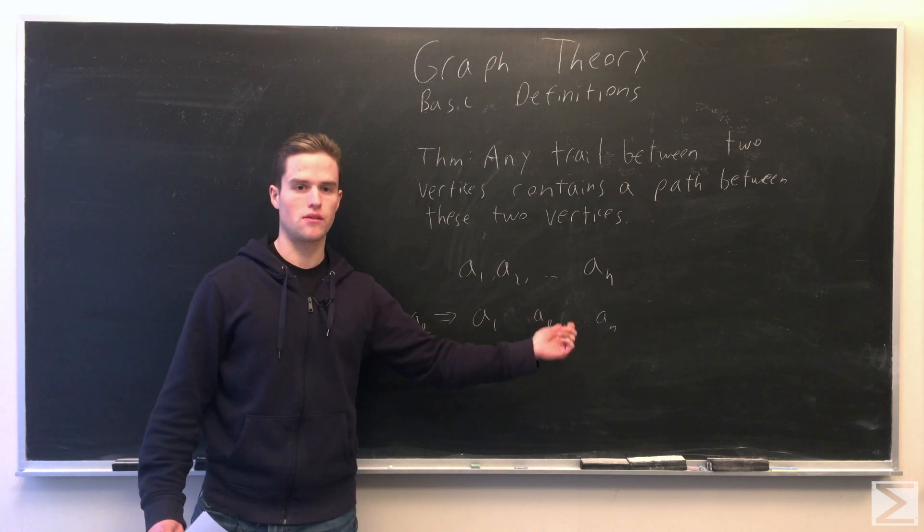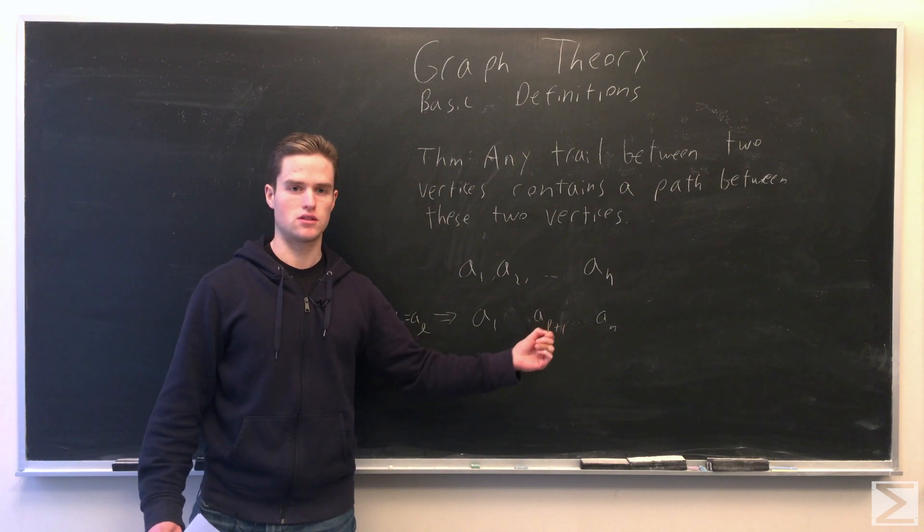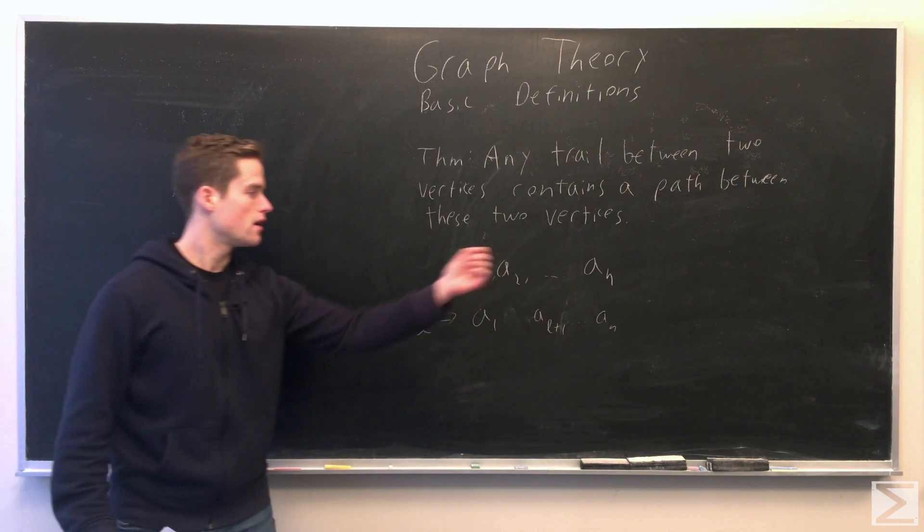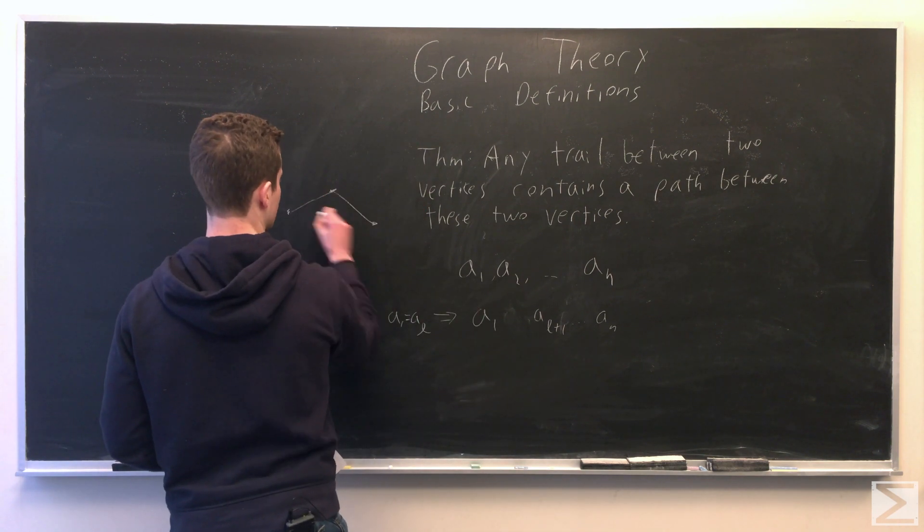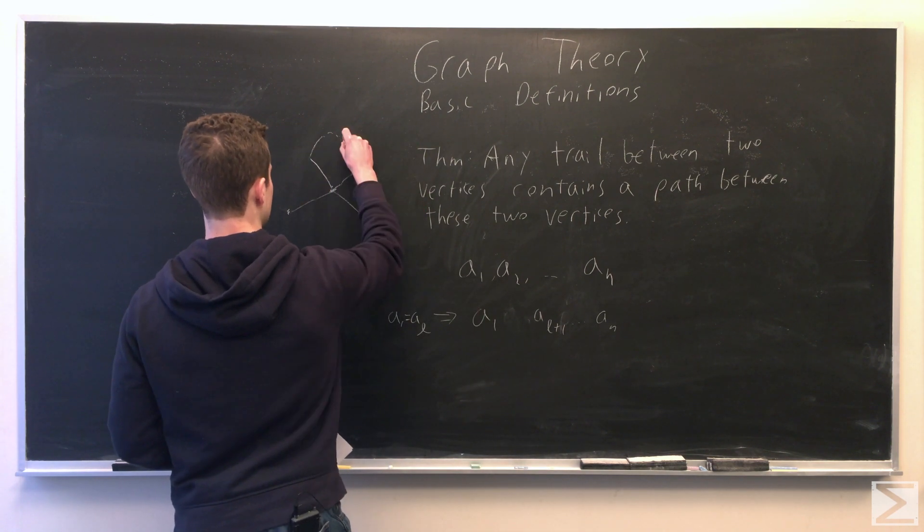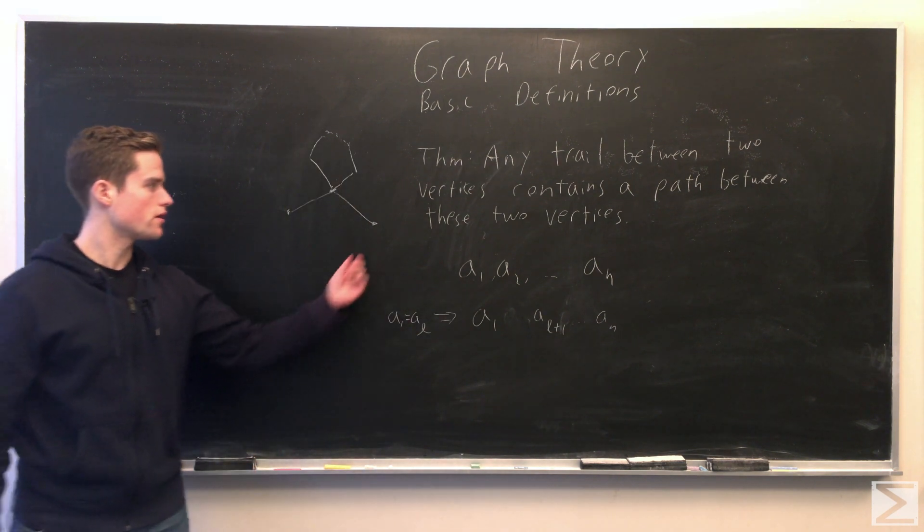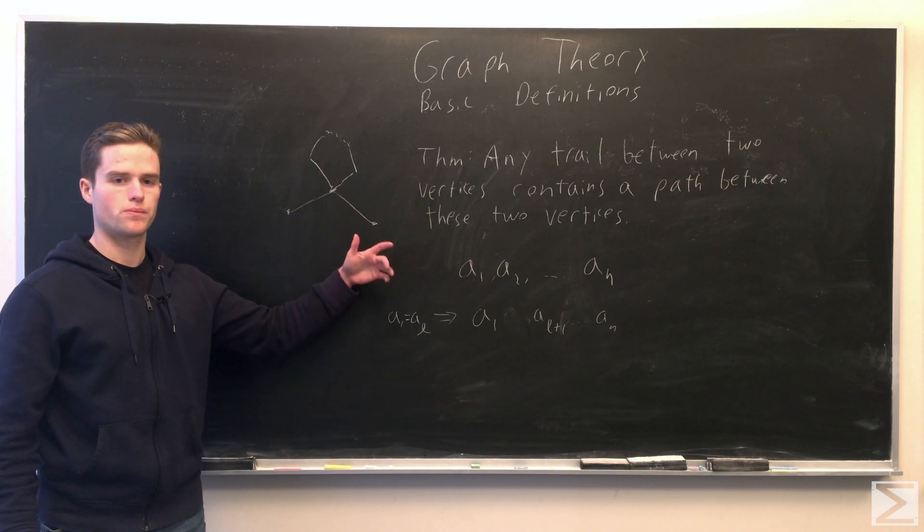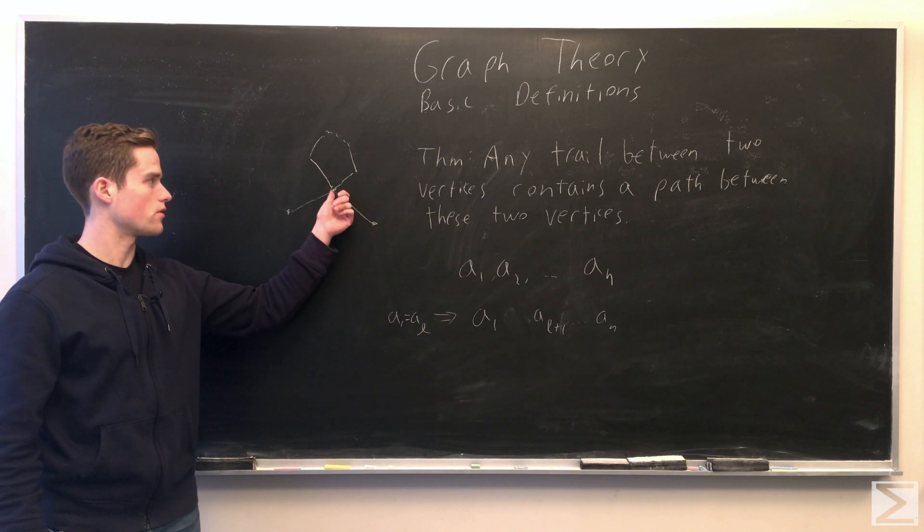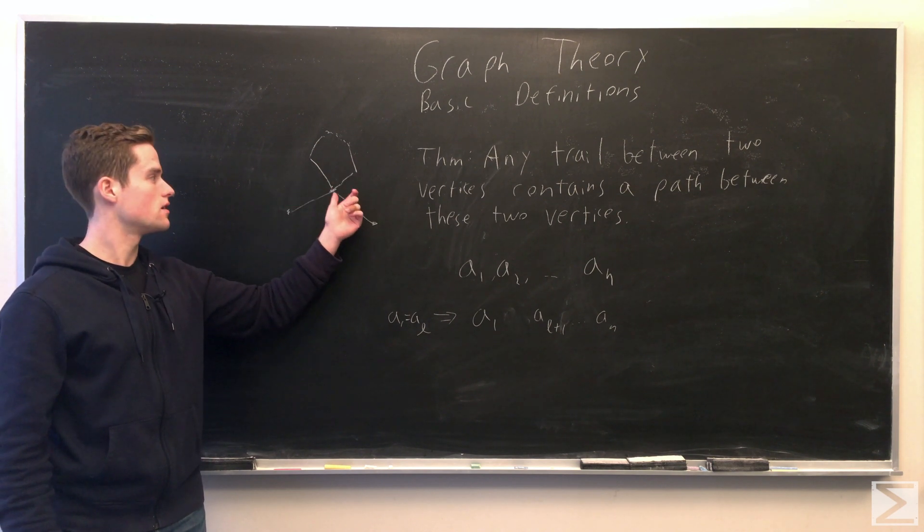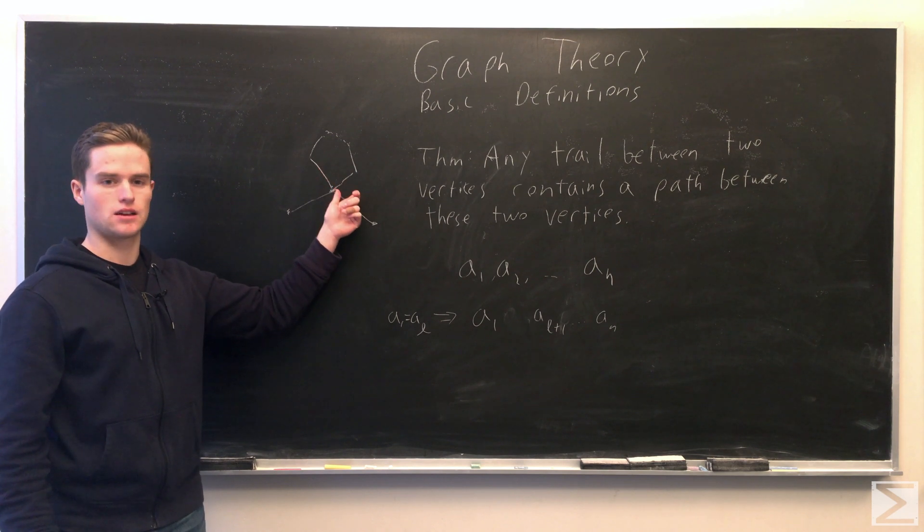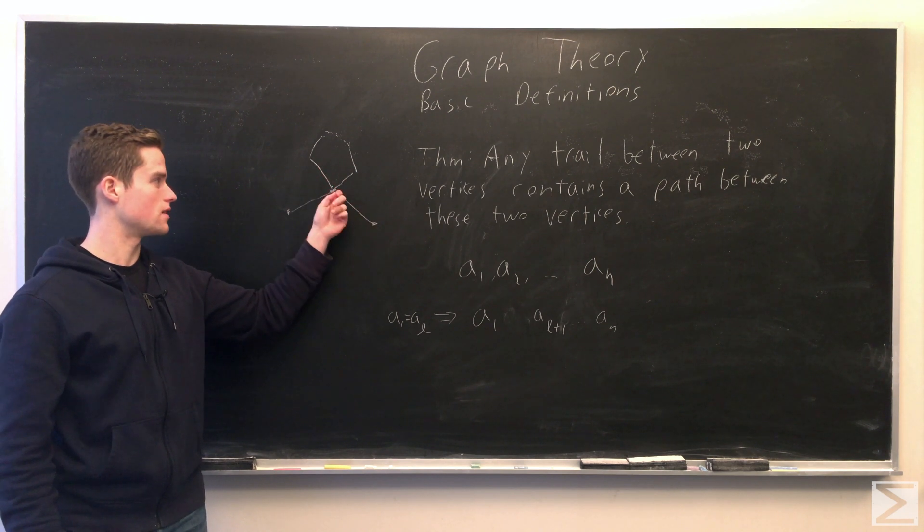And then AL plus 1, do the same thing, find the last time it shows up, remove all those vertices, take the next one. And effectively, what we're doing here is, we're in our trail, say we start here, and at some point we come to another vertex, then we come back to this vertex. We can remove all these different bits where something is happening. We can just remove this and take as our subset just this, then the next one.